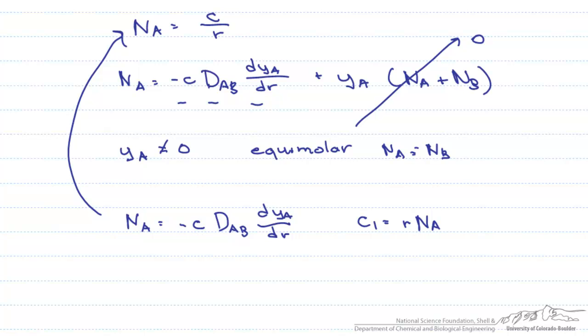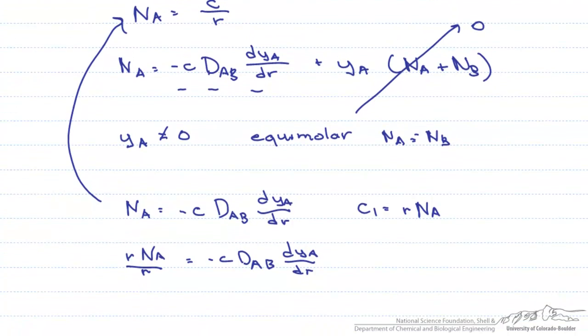We multiply that first term by R divided by R, or 1. What we are left with is R N A divided by R equals minus C D sub A B D Y A D R. And remembering that R N sub A is a constant.